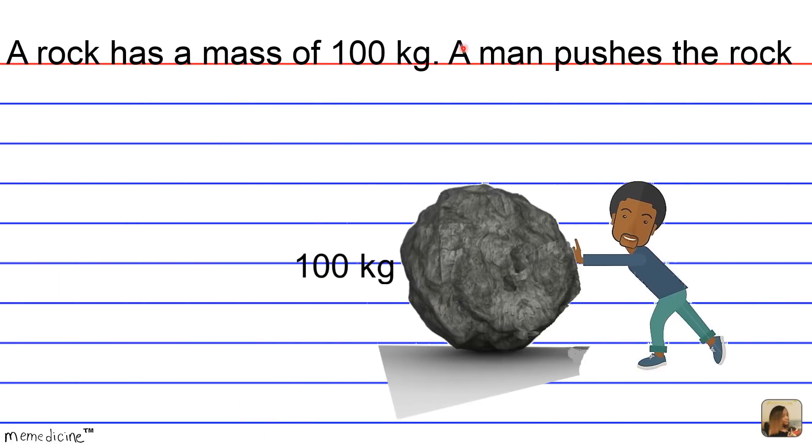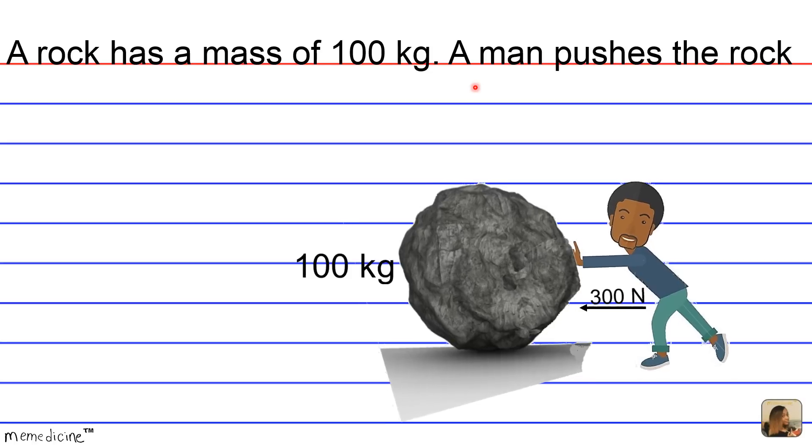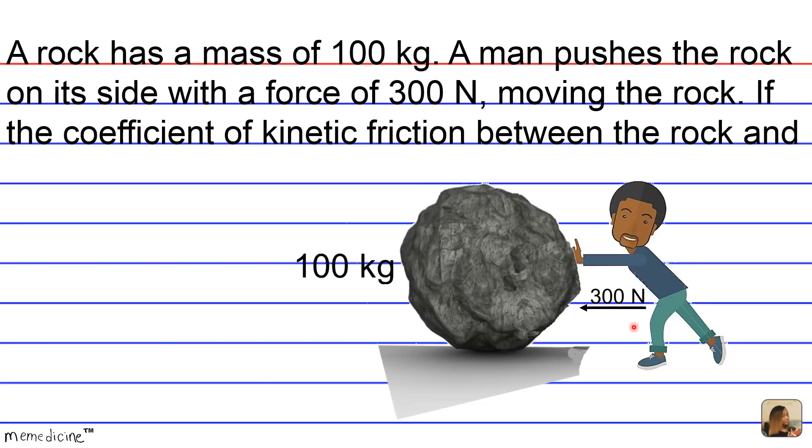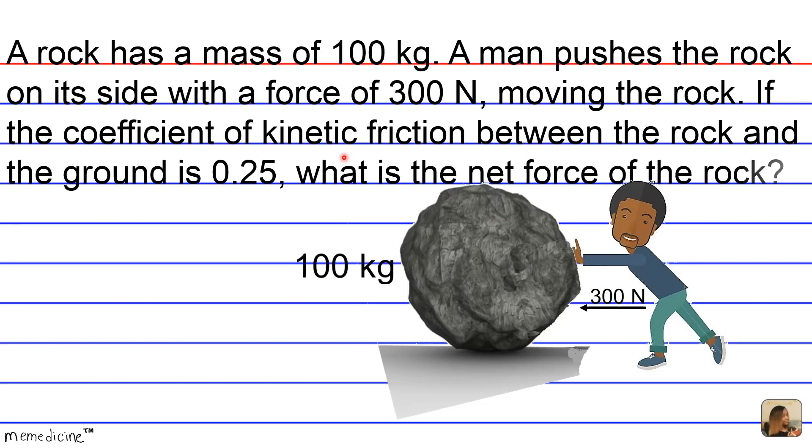A rock has a mass of 100 kilograms. A man pushes the rock on its side with a force of 300 newtons moving the rock. If the coefficient of kinetic friction between the rock and the ground is 0.25, what is the net force on the rock?